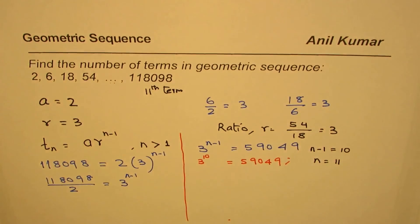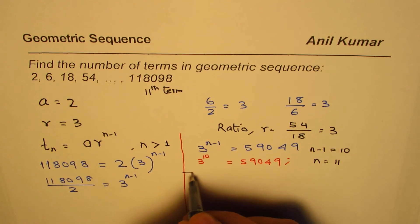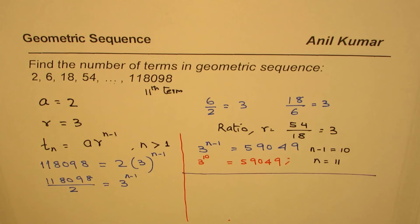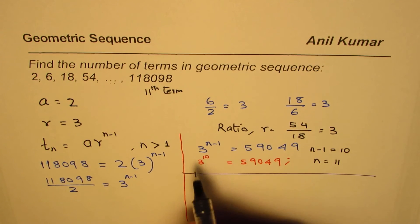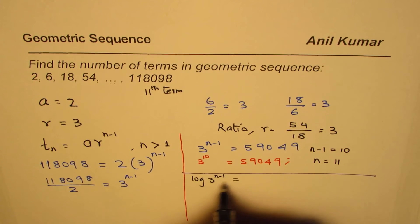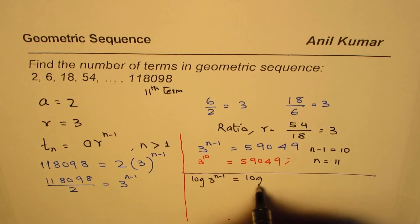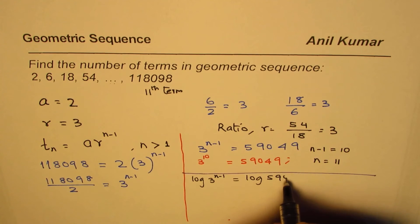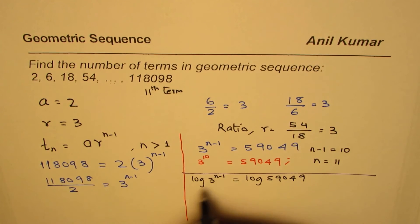So that is how you could do if you don't know logarithms. Now some of you understand logarithms, for them the solution will be kind of like this, let me do it the other way also. So the logarithm is take log both sides. When we take log of 3 to the power of n minus 1, we are taking log on both the sides, we take log of 59049.